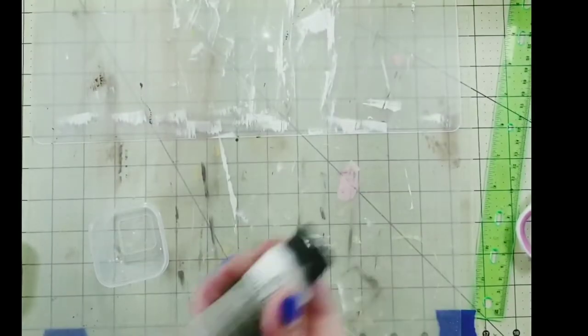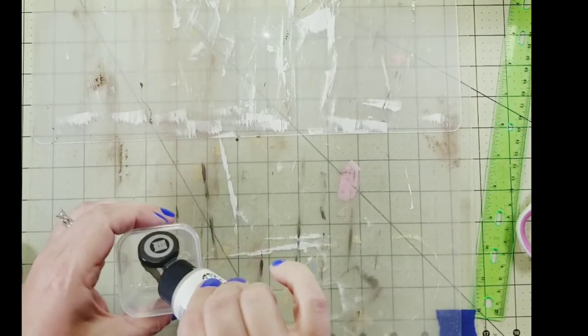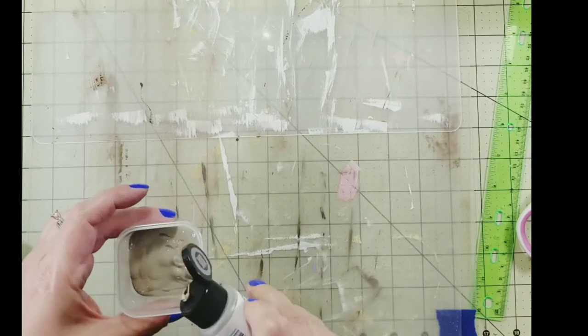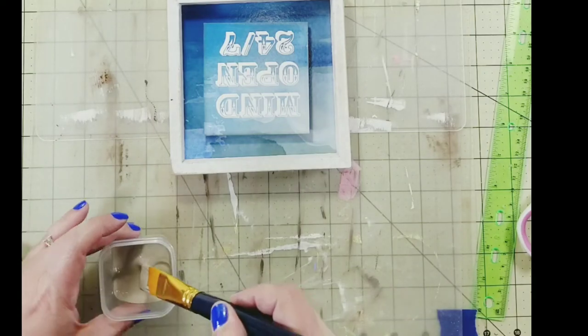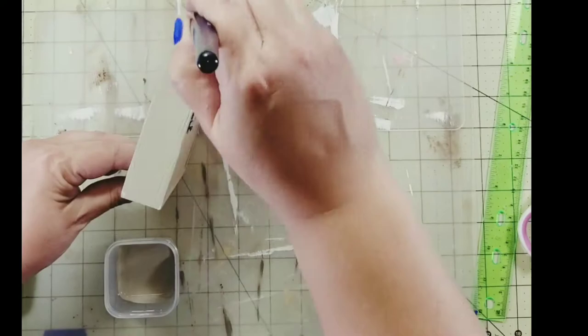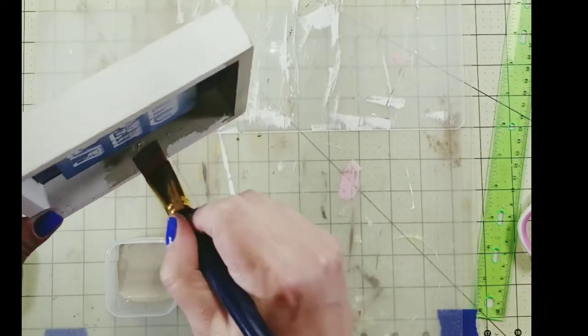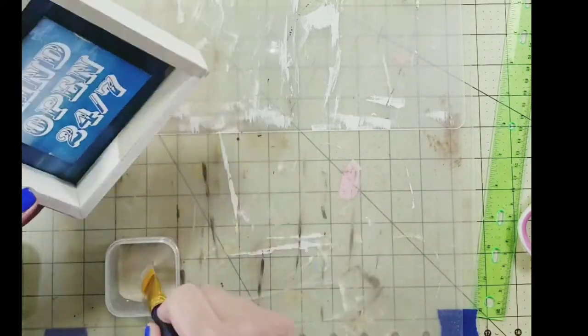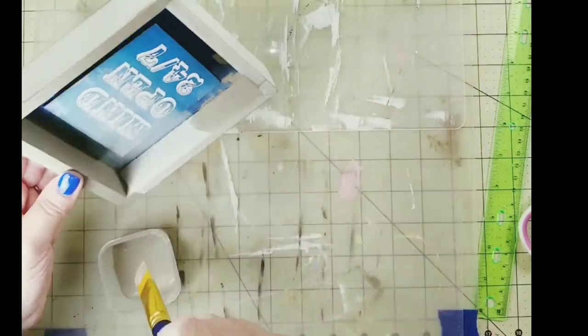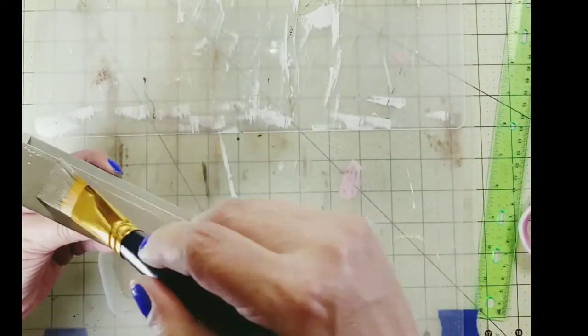Next, we're going to paint all the pieces. I use this Folk Art Home Decor chalk paint that I purchased at Michaels in the color Castle. I love to use these little square containers from the Dollar Tree to put my paint in if I'm going to be doing a bigger project because if I don't use all the paint I can just put the lid on it and use it for another project.